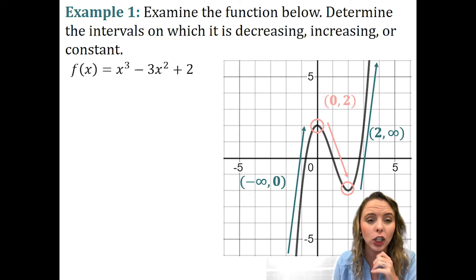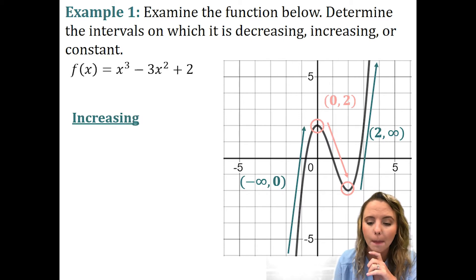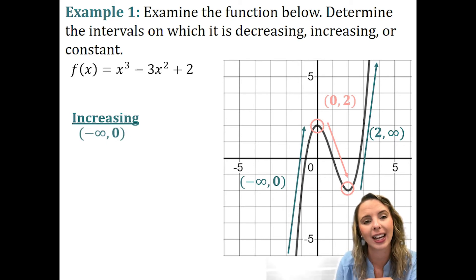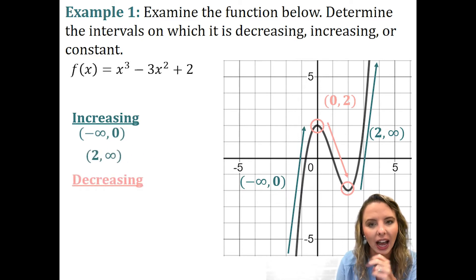So, let's actually start defining our increasing and decreasing intervals. Let's start with increasing. Our green line, our first green line that we drew from negative infinity to zero was going up. So, that's increasing. And then, our second green line from two to infinity, it was also going up. So, that's increasing. So, that's two to infinity. And then, we have one interval left and it's decreasing. From zero to two, that line was going down. So, we have a decreasing interval.